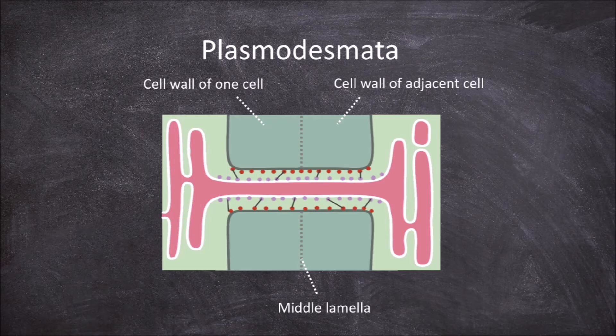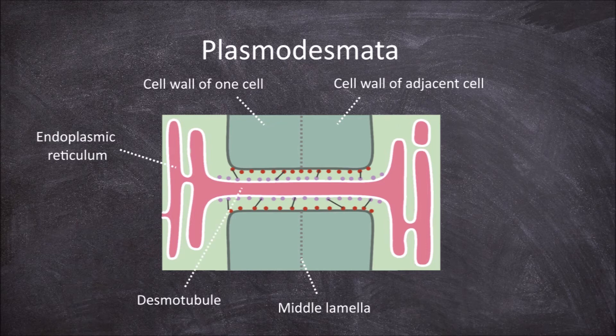In the centre of this tubular gap is a tubule of endoplasmic reticulum joining the endoplasmic reticulum of the two adjacent cells, called the desmotubule.